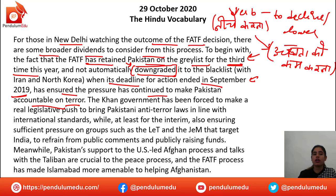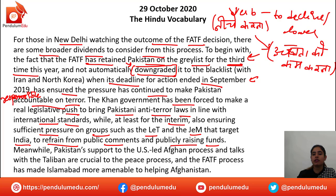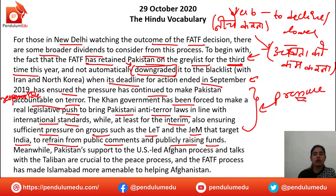This is the third time that Pakistan has been unable to live up to the tasks assigned, when its deadline for action ended in September 2019. The prolonged process has ensured pressure has continued to make Pakistan accountable — accountable meaning responsible — on terror. The Khan government has been forced to make a real legislative push to bring Pakistani anti-terror laws in line with international standards.